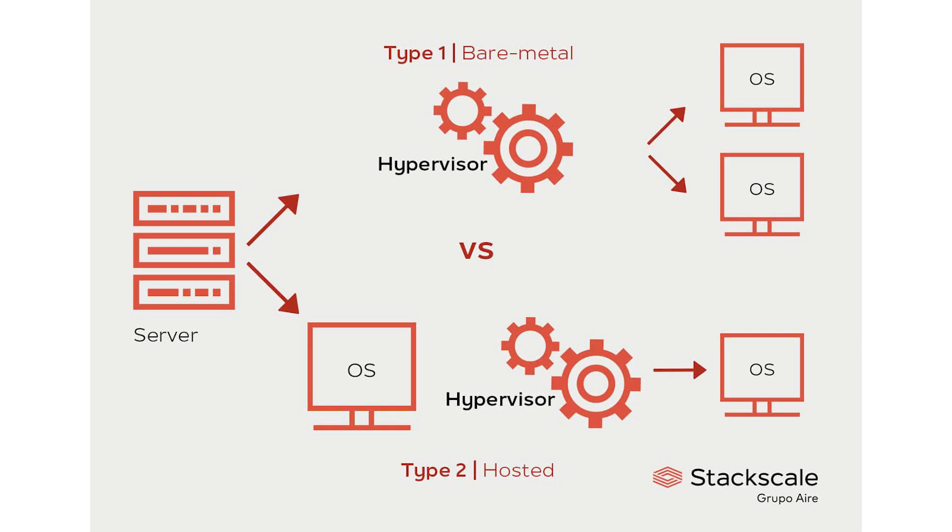Not all computers use a hypervisor layer, and it really comes into its own when there are multiple operating systems trying to share computer resources such as memory, disks, and IO. This situation usually arises when you're running multiple virtual computers on a single physical system. The hypervisor is there to make sure one virtual machine can't affect any other — either to hog resources or, as in the Xbox hypervisor case, to inject unauthorized code into the system.